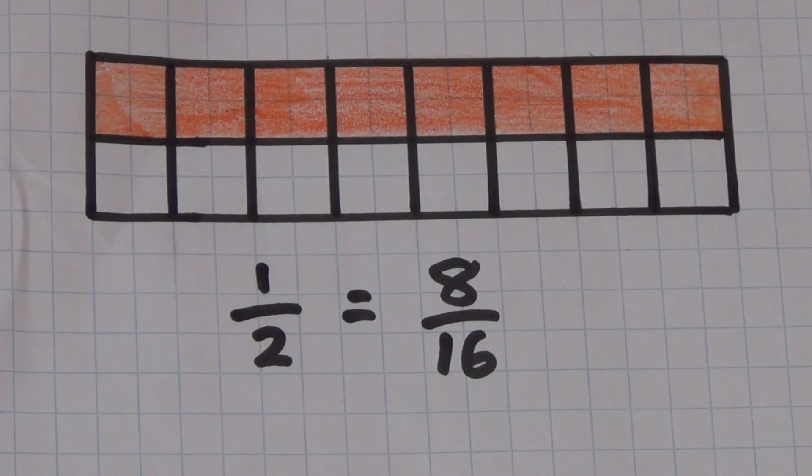One half is equivalent to eight-sixteenths. I have coloured in half of the rectangle which is eight out of the sixteen squares. Eight is also half of sixteen.